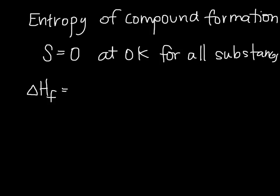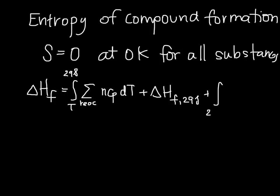And for the enthalpy of formation, we had the integral from T to 298 of the sum of all reactants, n CP dT, plus we had the enthalpy of formation at 298, and then we had the integral from 298 to T of the sum of all products, n CP dT. So we used this three-step process, and we can use basically a similar one to find the entropy change of formation.